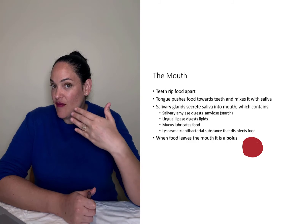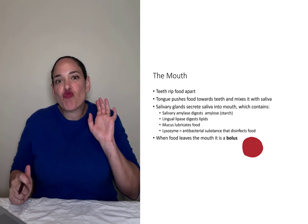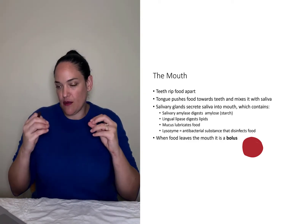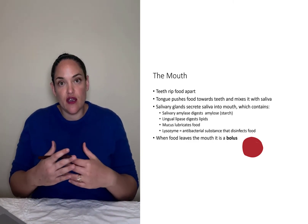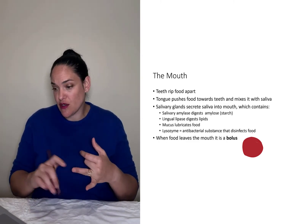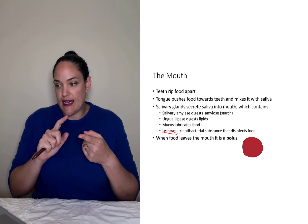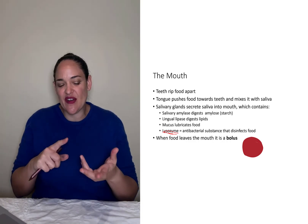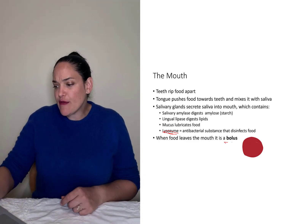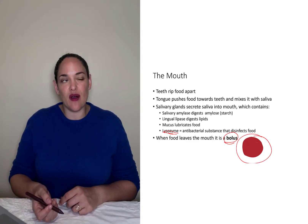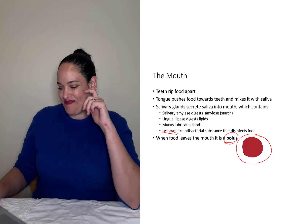The first part of the digestive tract is the mouth, where we have mechanical digestion — our teeth ripping things apart as we chew, our tongue pushing food up towards our teeth to break it down. We also have chemical digestion occurring through the action of saliva. Saliva contains water, an antibacterial substance called lysozyme, salivary amylase which digests starch, and lingual lipase which helps digest lipids. By the time food leaves our mouth it forms a ball called a bolus.